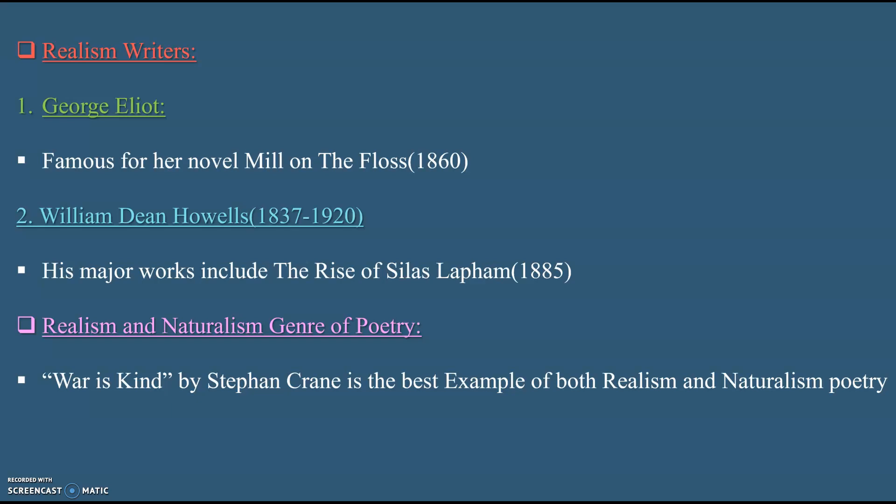Among the realistic writers, the first is George Eliot, who wrote important novels such as The Mill on the Floss, Middlemarch, and details of provincial life. The Mill on the Floss is about love going hand in hand with suffering. The second is William Dean Howells, also an important realistic writer, who wrote The Rise of Silas Lapham, in which he tells the story of a family trying to adjust to higher class society.